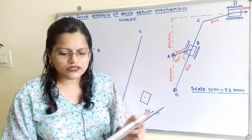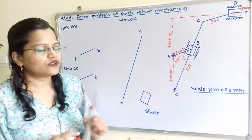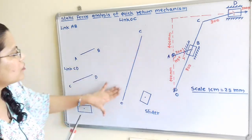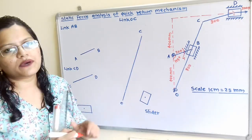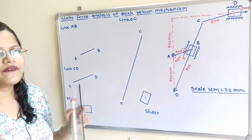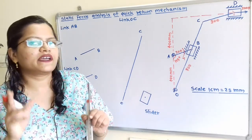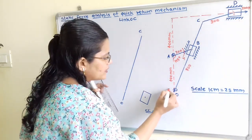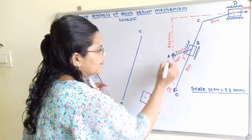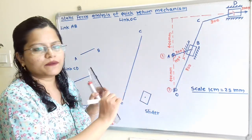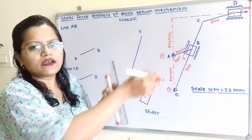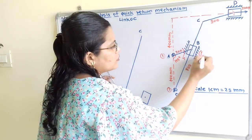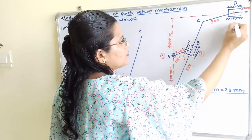We will now draw the free body diagram. For each link we take them separately and assign numbers. Fixed surfaces are given number 1 — this includes fixed point O, fixed point A, and the two surfaces along which the sliders move. So all fixed surfaces are labeled number 1.